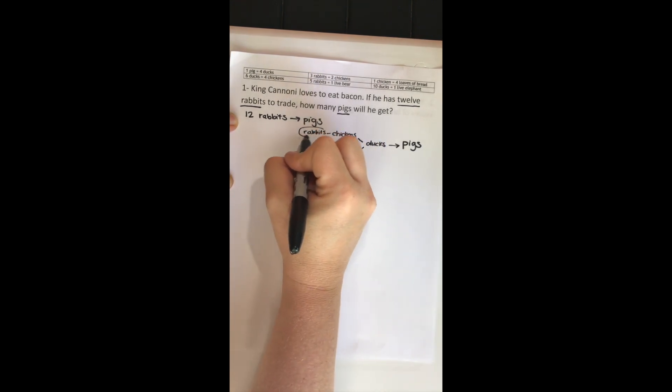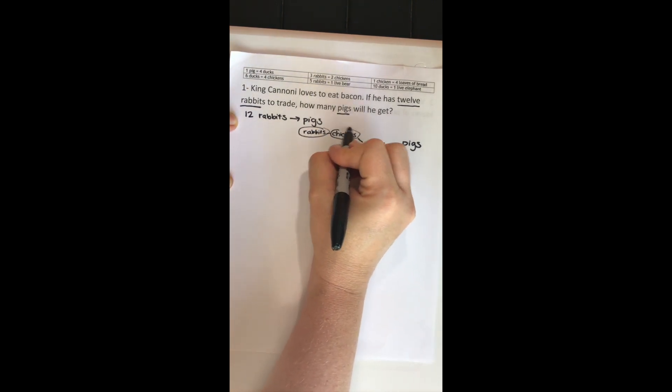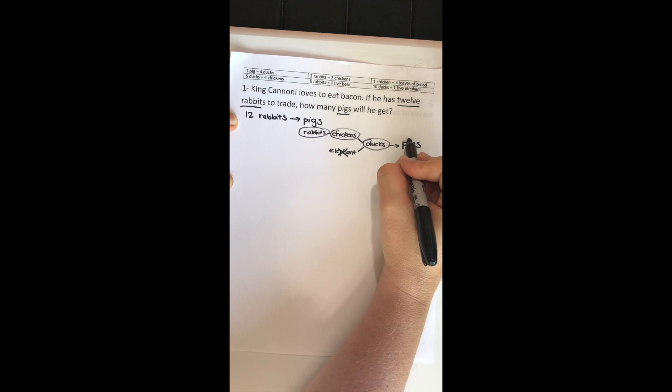It's right here. So my path tells me I have to go from rabbits to chickens to ducks and then to pigs. Alright, so now we're ready to format our problem.